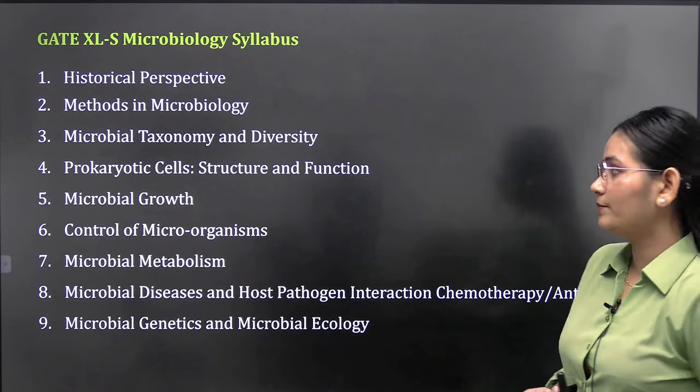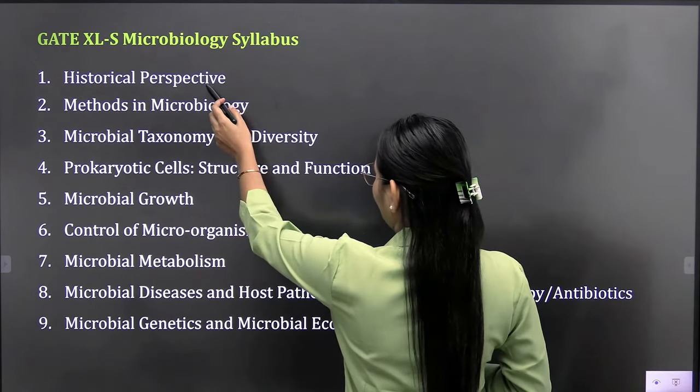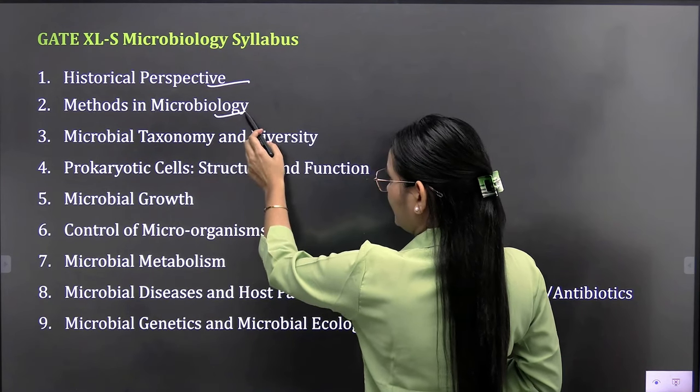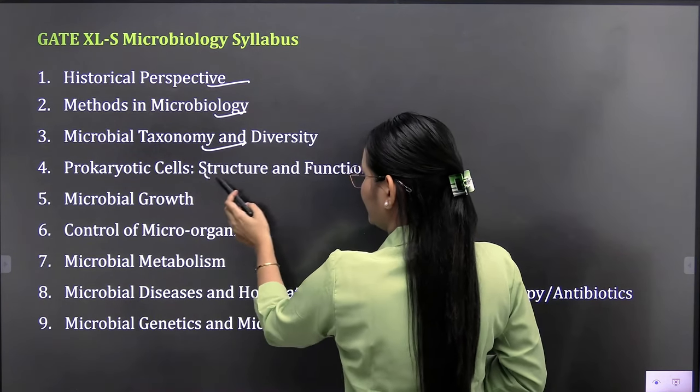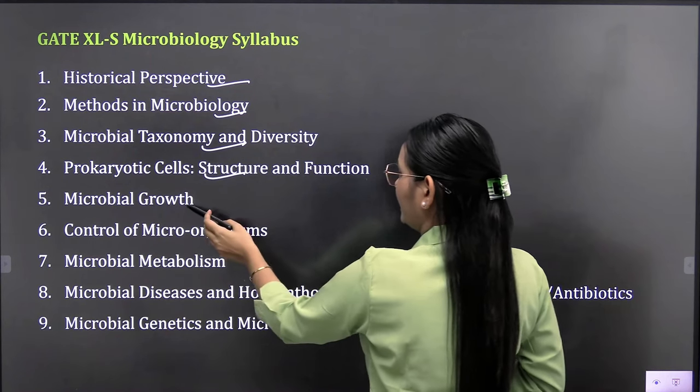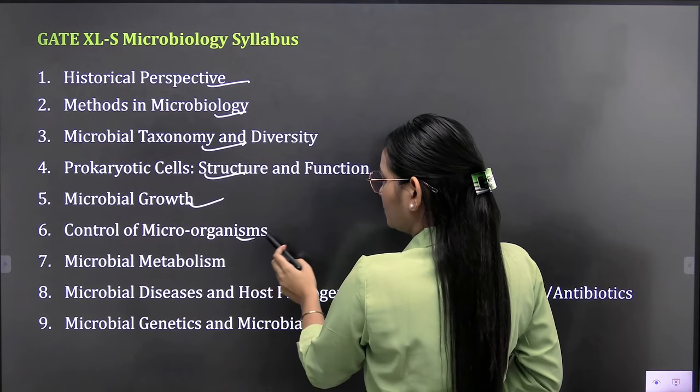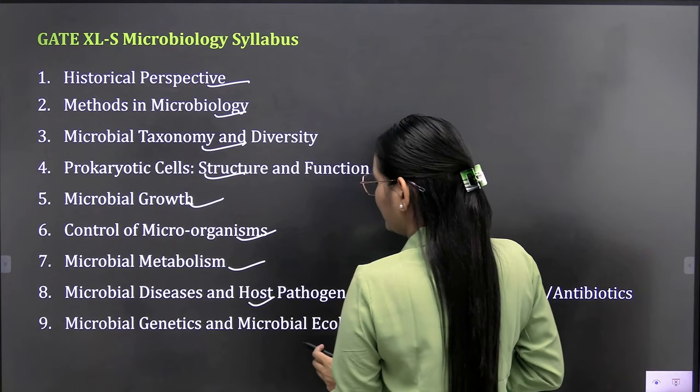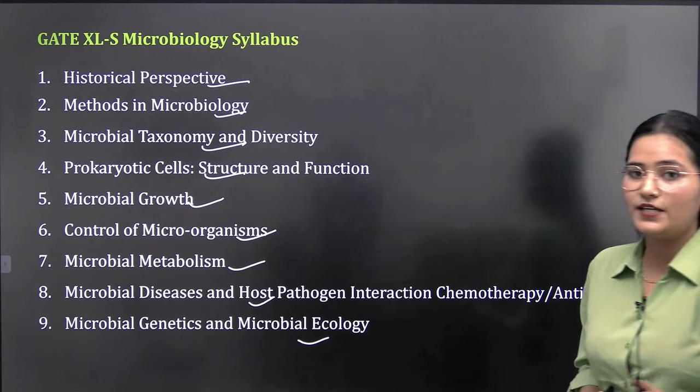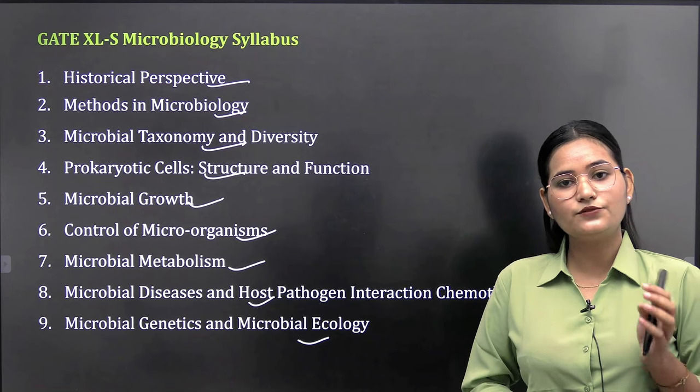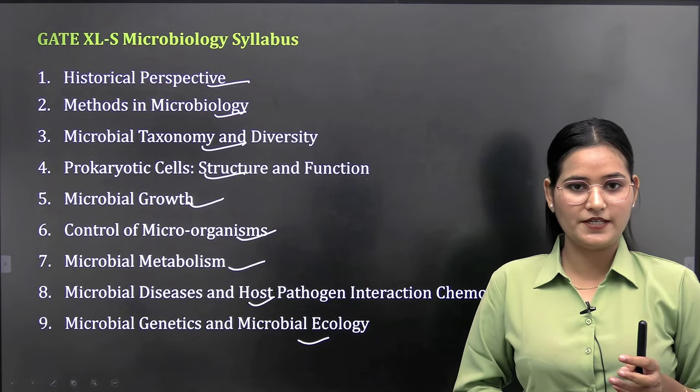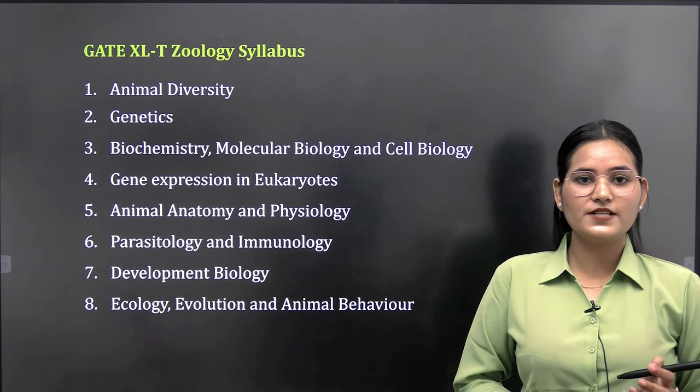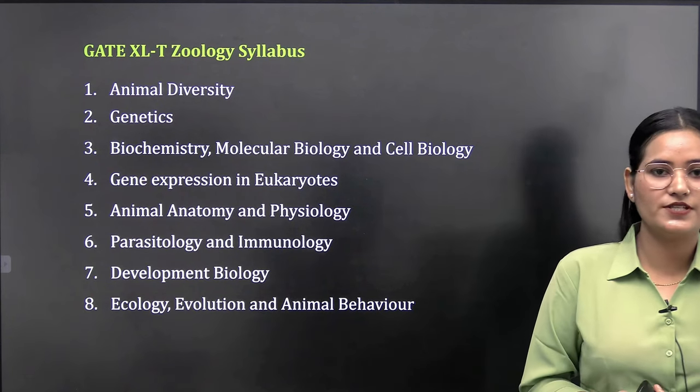Coming to the syllabus of microbiology. You will study historical perspectives of microbiology, methods in microbiology, taxonomy, prokaryotic cell structure and function, microbial growth, control of microorganisms, microbial metabolism, microbial diseases, and microbial genetics and ecology. Basically nine units you have to cover.